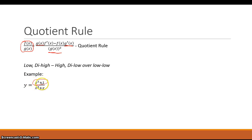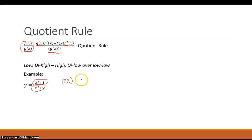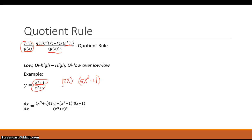For the quotient rule example, we have (x^2 + 1) / (x^5 + x). The derivative of the numerator is 2x, and the derivative of the denominator is 5x^4 + 1. Applying the quotient rule pattern: the denominator (x^5 + x) times the derivative of the numerator (2x), minus the numerator (x^2 + 1) times the derivative of the denominator (5x^4 + 1), all over the denominator squared.